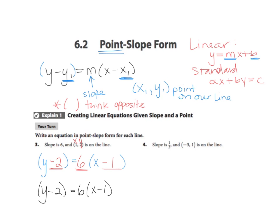Let's do one more of those a little more quickly. The first parentheses is y — think opposite because it's inside parentheses — so this is going to be y minus 1. My slope m is 1 third. And then in the other parentheses is x, and I want to think opposite again. Since the x is negative 3, I'm going to write x plus 3. Rewatch that slide if you need to.